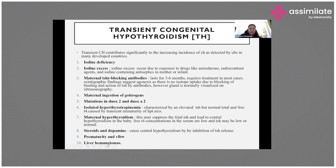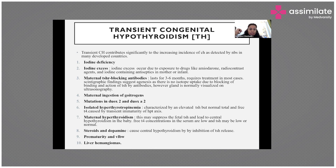Other transient causes include maternal ingestion of goitrogens, and DUOX2 and DUOXA2 enzyme defects which can be reversible or transient. There is also isolated hyperthyrotropinemia, where only TSH is elevated but T4 and free T4 are normal — this occurs typically in preterm or sick neonates due to transient immaturity of the hypothalamic-pituitary axis.